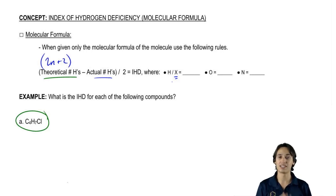Do you guys remember what X is? X would be a halogen and that counts as one hydrogen. For this formula, I count a halogen and a hydrogen exactly the same.